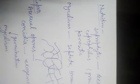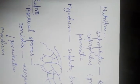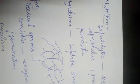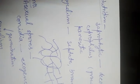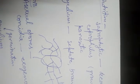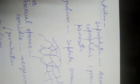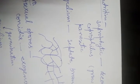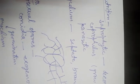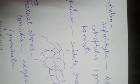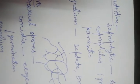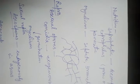Ascomycetes are coprophilous — they grow on excreta. Those that directly eat excreta are called coprophagous, as 'phagus' means eating. Ascomycetes may be coprophytic, coprophilous, and many times are also parasitic.